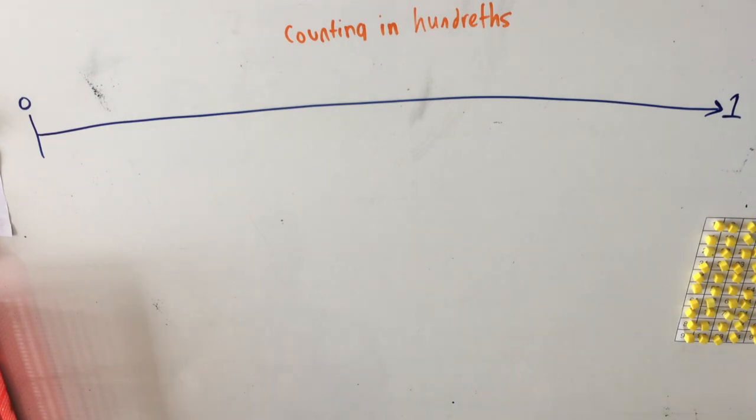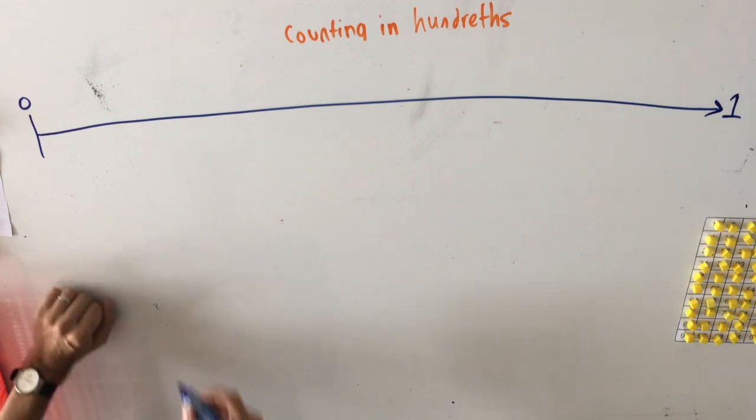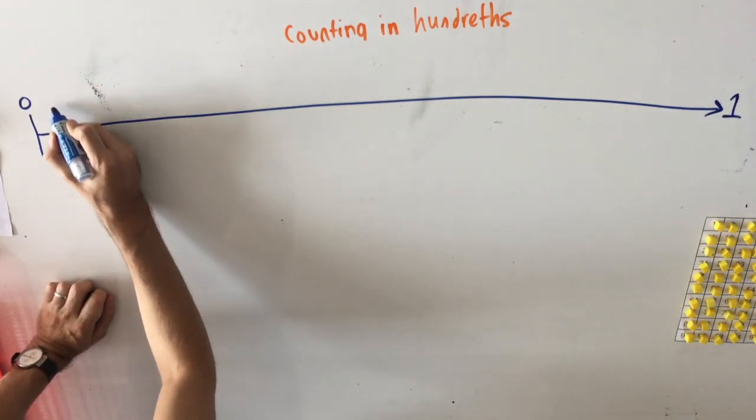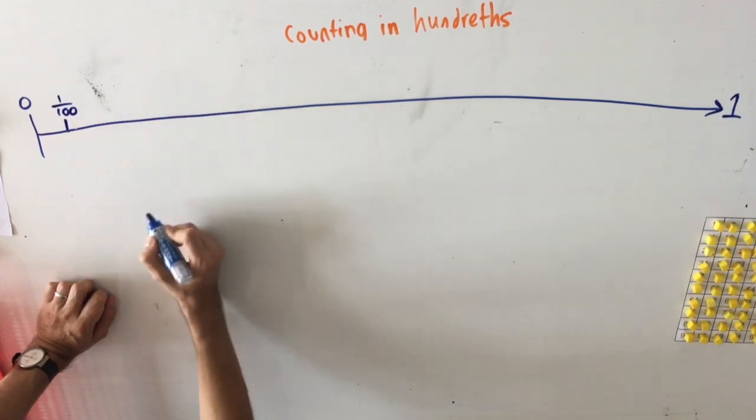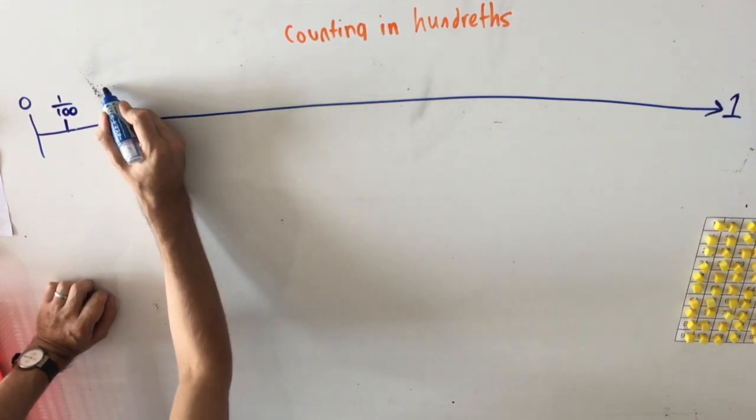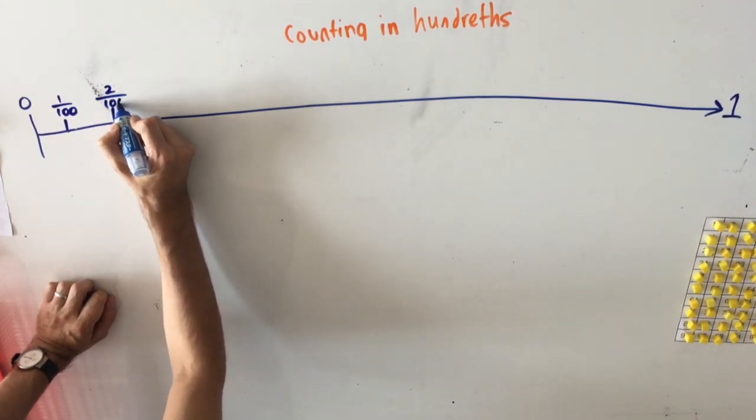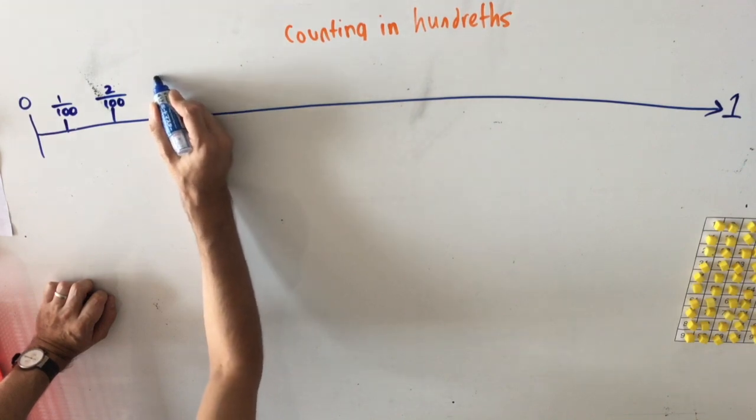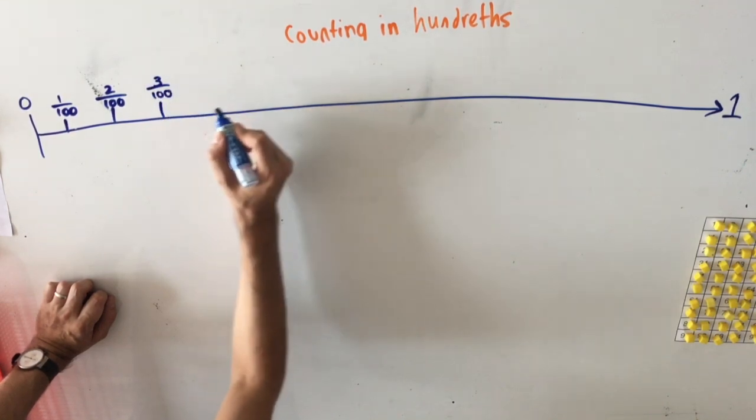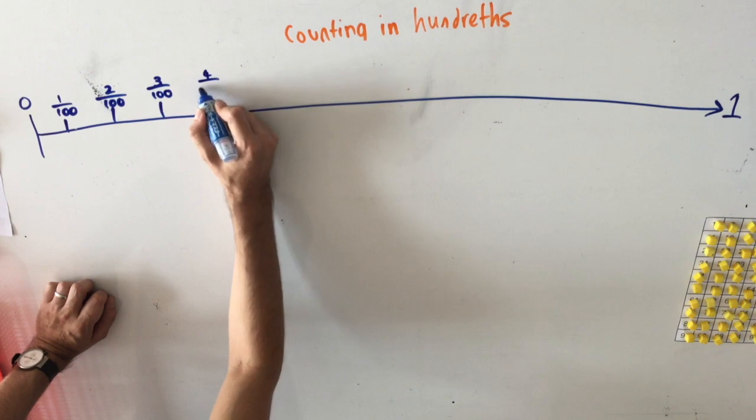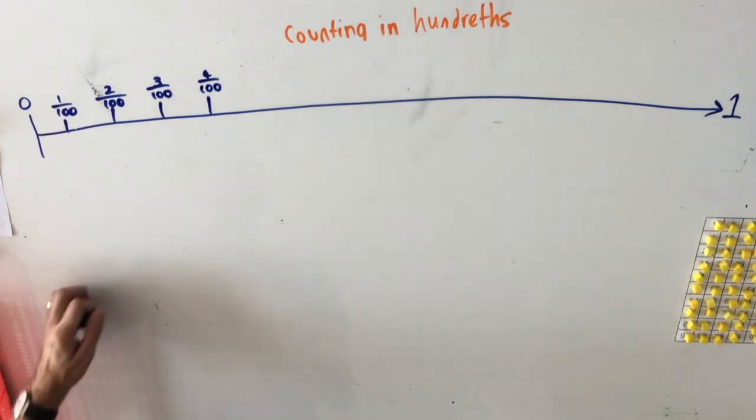So what would the first number in our hundred line be? It would be one one hundredth, therefore the second number would be two one hundredths, followed by three one hundredths, four one hundredths, and so on, all the way to one hundred one hundredths, which is the same as one.